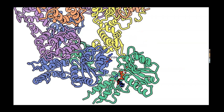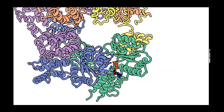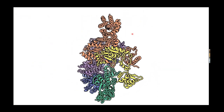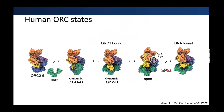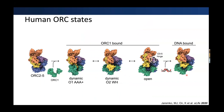Once ORC1 really forms this tight ATP interface, it can displace the ORC2 wing helix domain into a dynamic state, also allowing the complex to open up for DNA binding, CDC6, and then MCM to go through this DNA replication initiation event. Here's the movie in one slide showing all the conformations going from ORC2 through 5 complex — once ORC1 binds, you have dynamic movement and opening of the complex, and then eventual binding of the DNA.